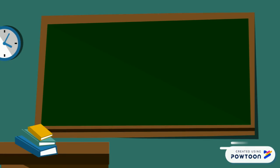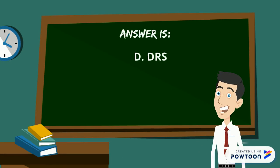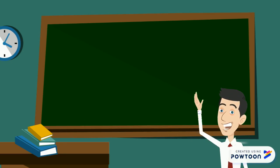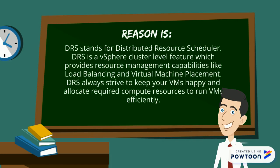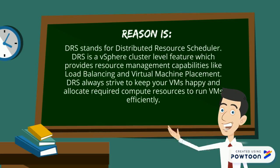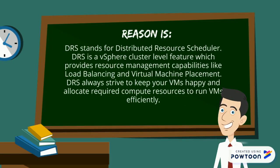The answer is DRS. Let's understand the reason why. DRS stands for Distributed Resource Scheduler. It is a vSphere cluster-level feature which provides resource management capabilities like load balancing and VM placement. DRS always strives to keep your VMs happy and allocate the required compute resources to run VMs efficiently.